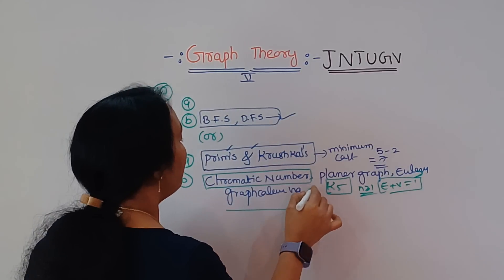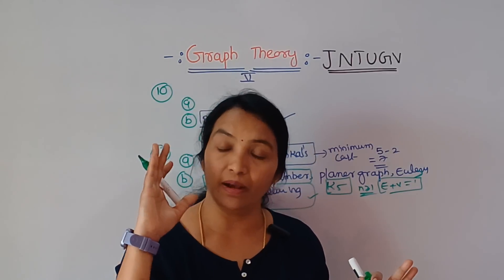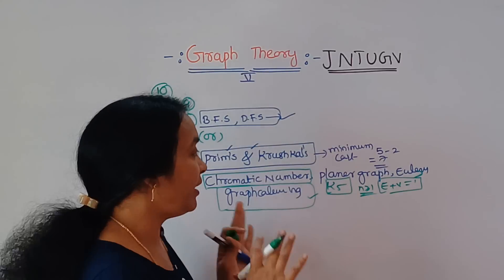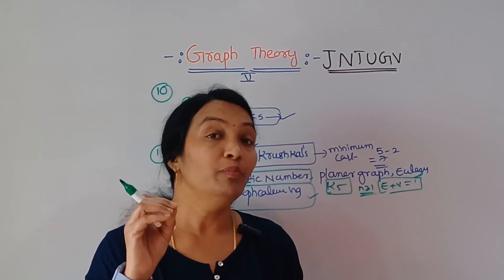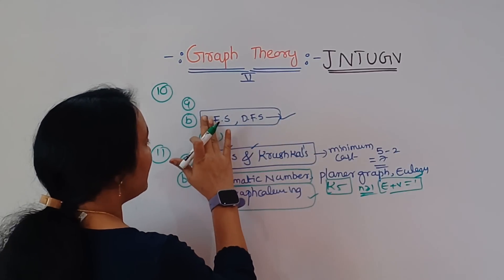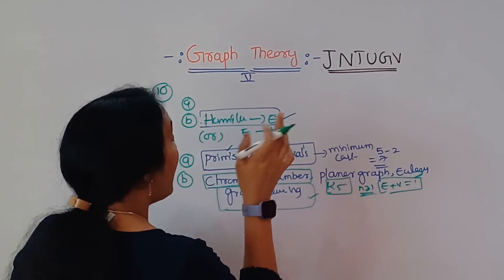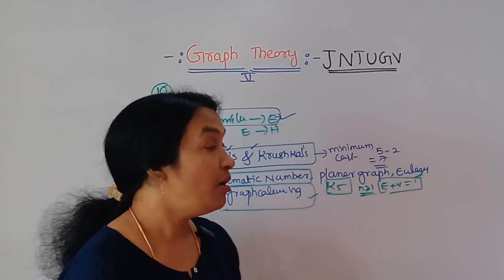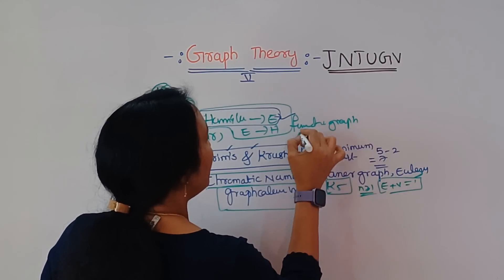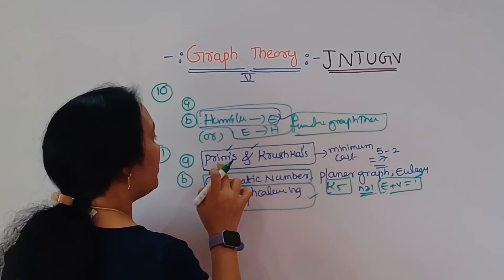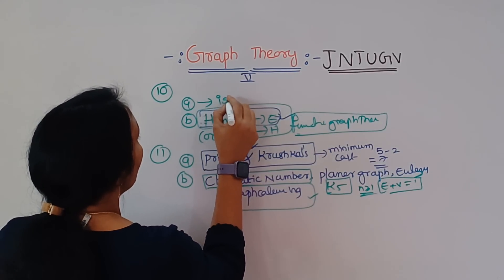As you can see graph coloring, you can use a short question. Compulsory 8 marks, short and long calculate. And remaining very most important is BFS DFS. Every Hamilton is Eulerian and every Eulerian is Hamilton, Hamilton but not Eulerian, Eulerian but not Hamilton. The fundamental theorem of graph theory, 8 marks short. Very most important is isomorphic. Two graphs say isomorphic.